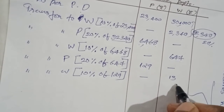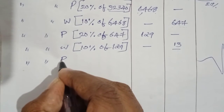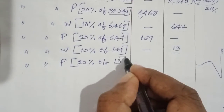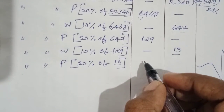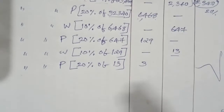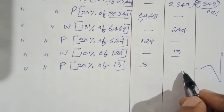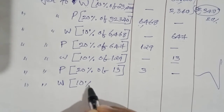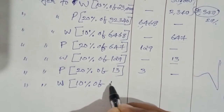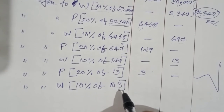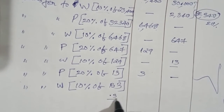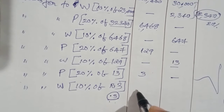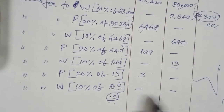Again transfer 10% of 129 to service department W: 10% of 129 = Rs. 13 (12.9 rounded). Then 20% of Rs. 13 back to P = Rs. 3 (2.6 rounded). Then 10% of Rs. 3 to W = Rs. 0.3. Since 0.3 is negligibly small, we stop here — we cannot distribute such a small amount further between the two departments.